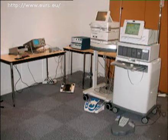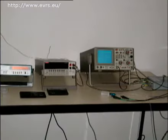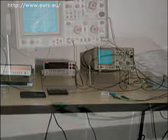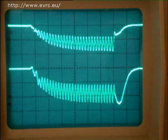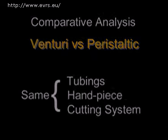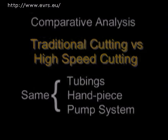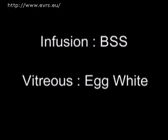These authors studied the performance of different machines by measuring the actual flow and actual depressions at the pump level. Pressure indicators at the test chamber level and at the exit of the handpiece permitted them to measure, with the help of very precise instruments, simultaneous pressure variations. To avoid all possible error in the comparative analysis of venturi vs. peristaltic or classical cutting vs. high speed, all other parameters were kept constant at each stage. The infusion liquid was BSS, and egg white was chosen due to its heterogeneous and viscoplastic characteristics that are similar to the vitreous.